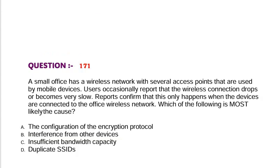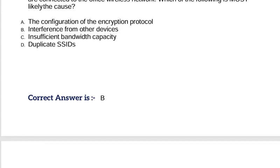Question: A small office has a wireless network with several access points used by mobile devices. Users occasionally report that the wireless connection drops or becomes very slow, and this only happens when the devices are connected to the office wireless network. Which of the following is most likely the cause? Option A, the configuration of the encryption protocol. Option B, interference from other devices. Option C, insufficient bandwidth capacity. Option D, duplicate SSIDs. Correct answer is Option B.